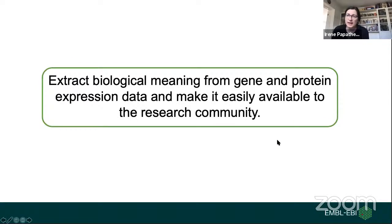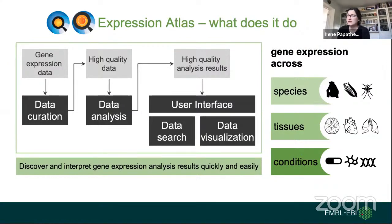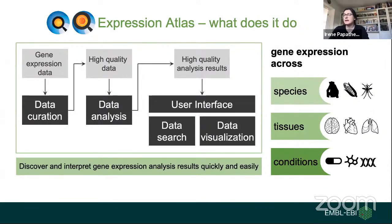My team's mission is to extract biological meaning from gene and protein expression data and make it easily available to the research community. For this purpose, we developed the Expression Atlas — an open science resource that enables querying and visualizing gene and protein expression across different species, tissues, and conditions. We collect datasets produced by the research community from public archives, perform very deep data curation on their metadata, and annotate them with ontology terms so they can be easily findable and searchable.